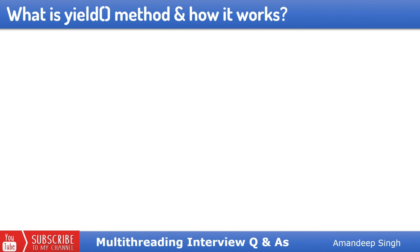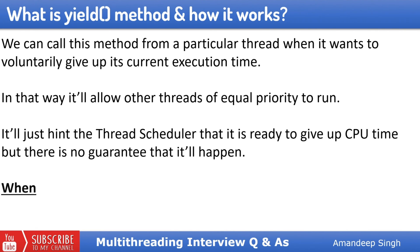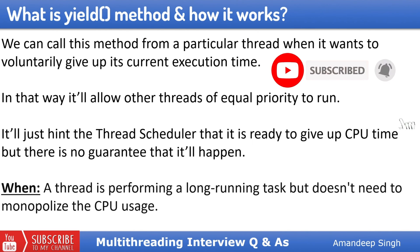Next question is, what is the yield method and how does it work? When a thread is executing a long-running task and wants to voluntarily give up its current execution time, it can call the yield method. It will not actually give up right away but will just hint the thread scheduler that it is ready to give up the CPU time — though there is no guarantee that it will happen. In that way, it will allow other threads of equal priority to run. The best use case of the yield method is when a thread is performing a long-running task but does not need to monopolize CPU usage, so it can use yield to release the CPU.